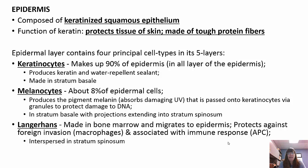In the stratum basale, melanocytes have projections which extend into the stratum spinosum — we'll talk about these layers in a moment. Langerhans cells are made in the bone marrow and then migrate to the epidermis. They are macrophages that protect against foreign invasion and act in immunity. They're antigen-presenting cells, which you'll learn about in the immunity chapter. These cells are interspersed throughout the stratum spinosum.